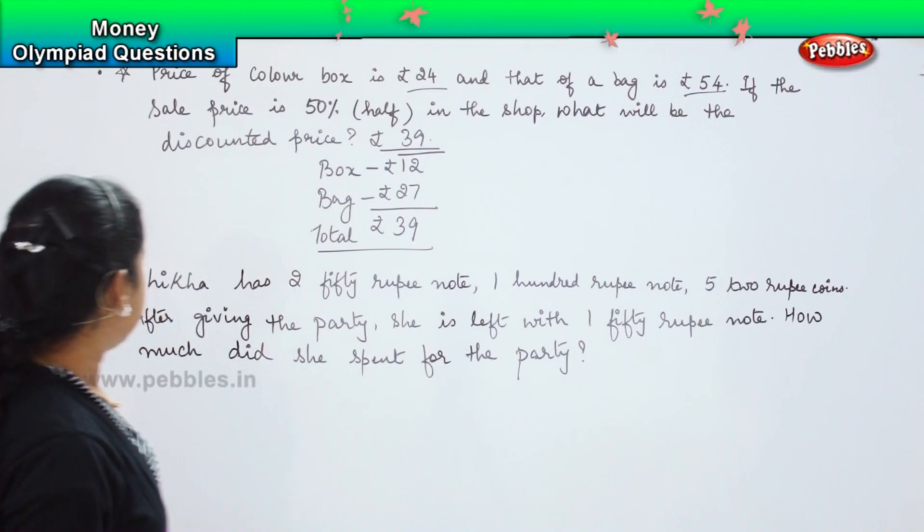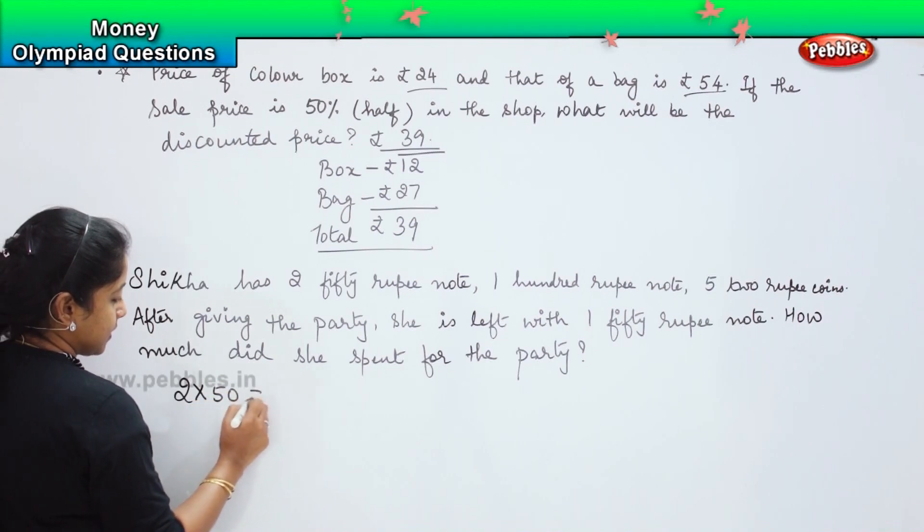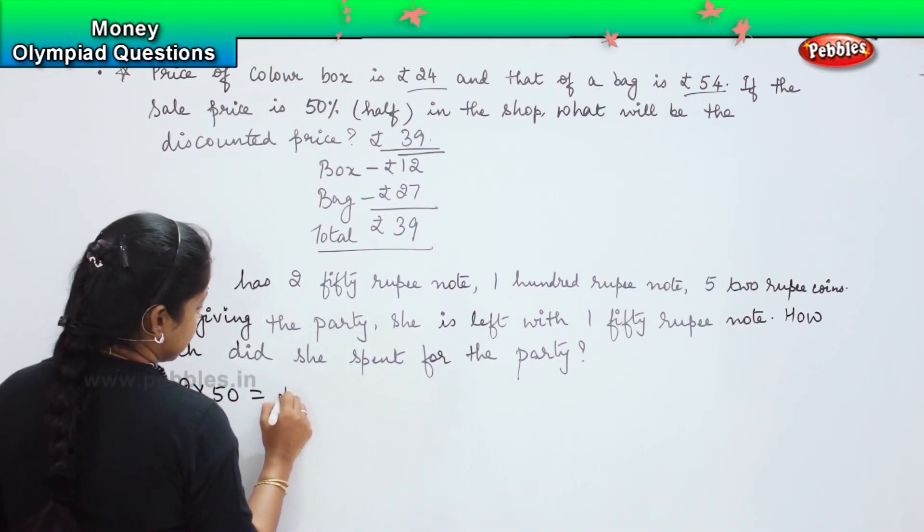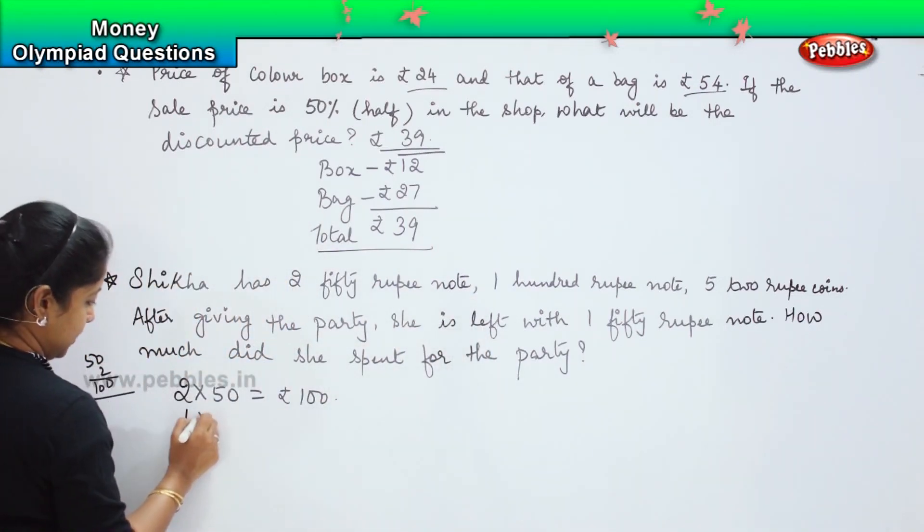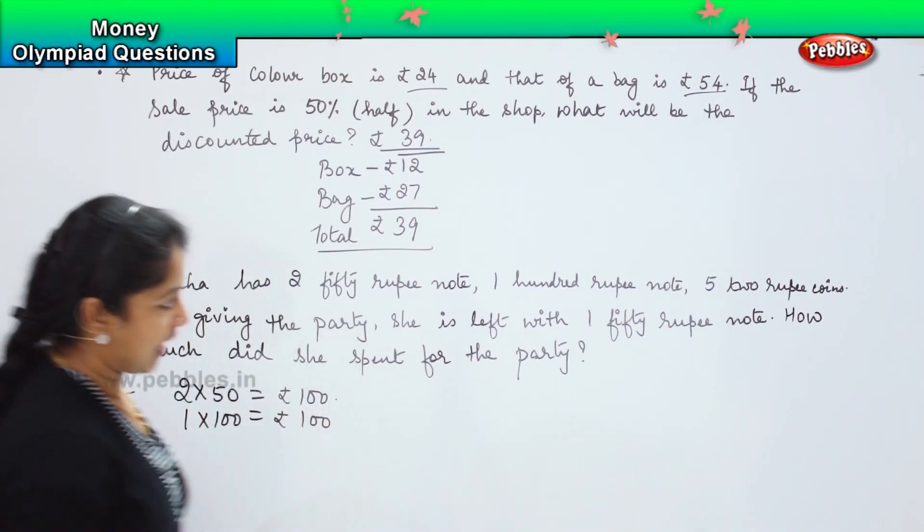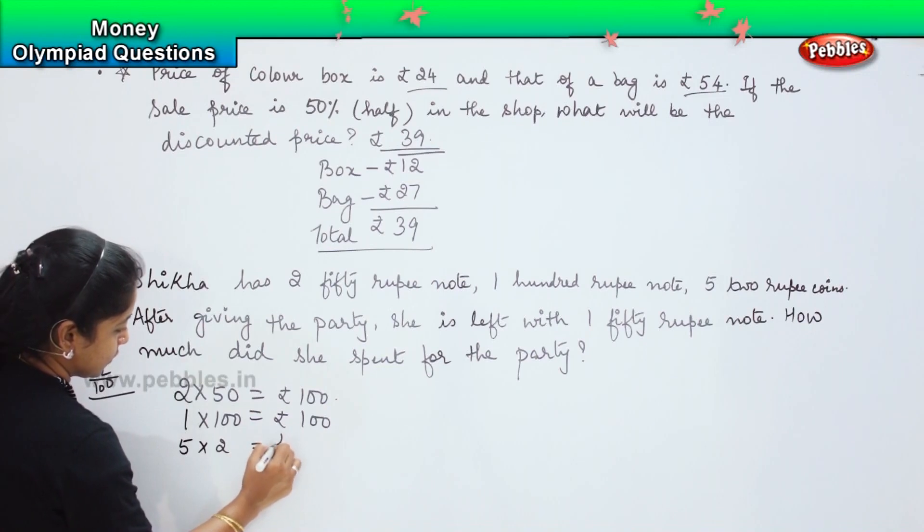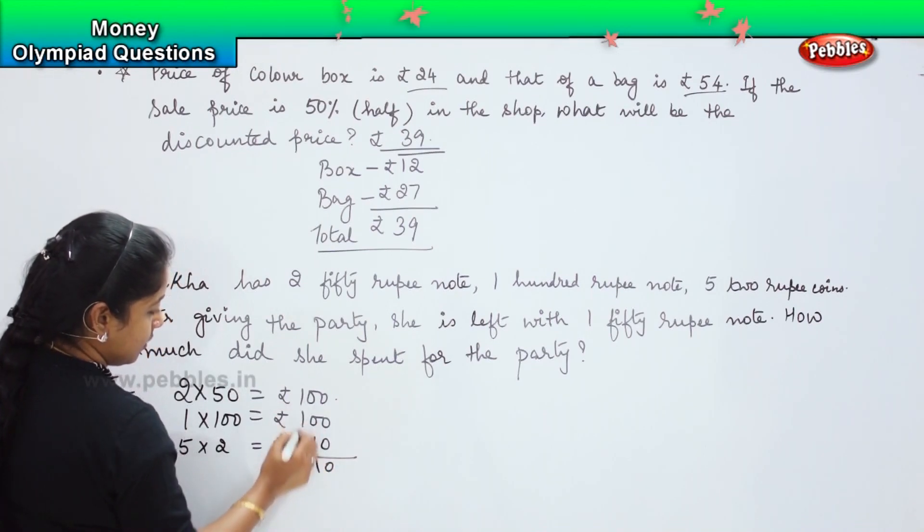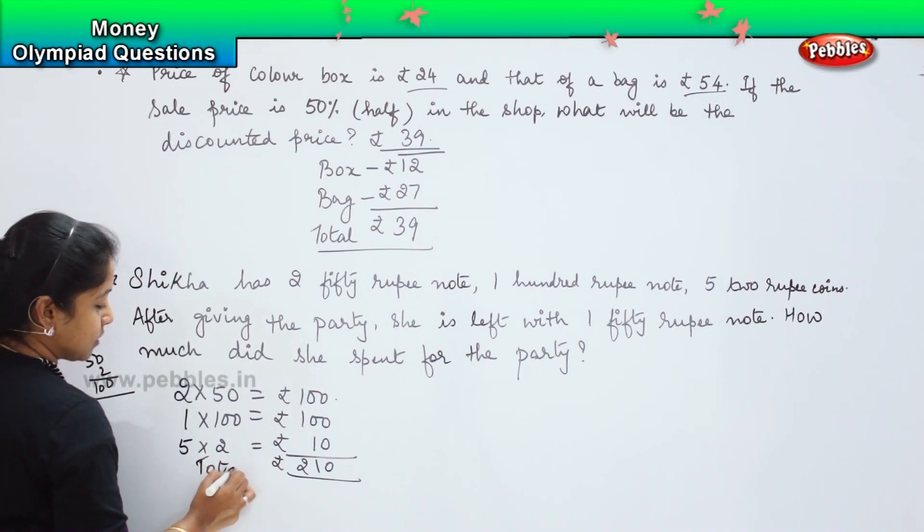Did you understand the question here? It says that Shikha has 2, 50 rupee note. So which means that 2 into 50 is equals to how much? 50 into 2, 0, 5, 2s are 10. So which means that she has 100 rupees with her and she had 100 rupee note. So again she had 100 into 100 and 5, 2 rupee coin. So 5, 2 rupee coin, which is 10 rupees. So how much she had in total? 0, 1, 1 plus 1 is 2. So she had a total of 210 rupees with her.